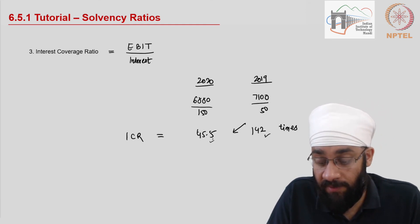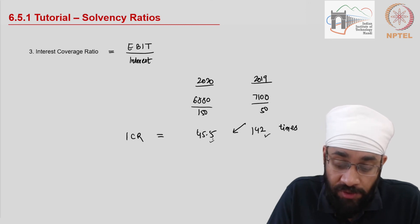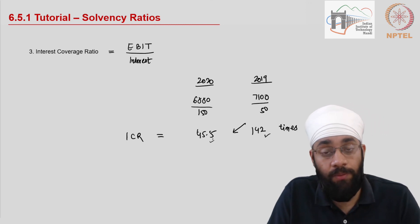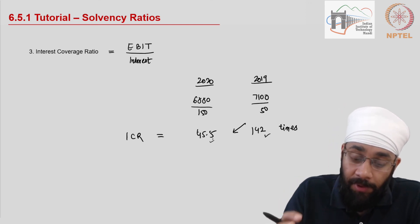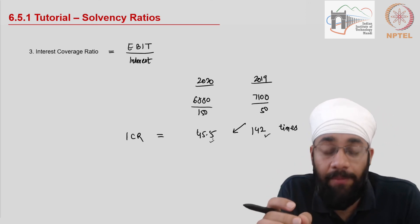This indicates that your ability to meet the interest expenses is 142 times and now it is 45.5 times. It has reduced across these two years. But a very high ratio is also not desirable because it could indicate that you are underutilizing the debt capital.